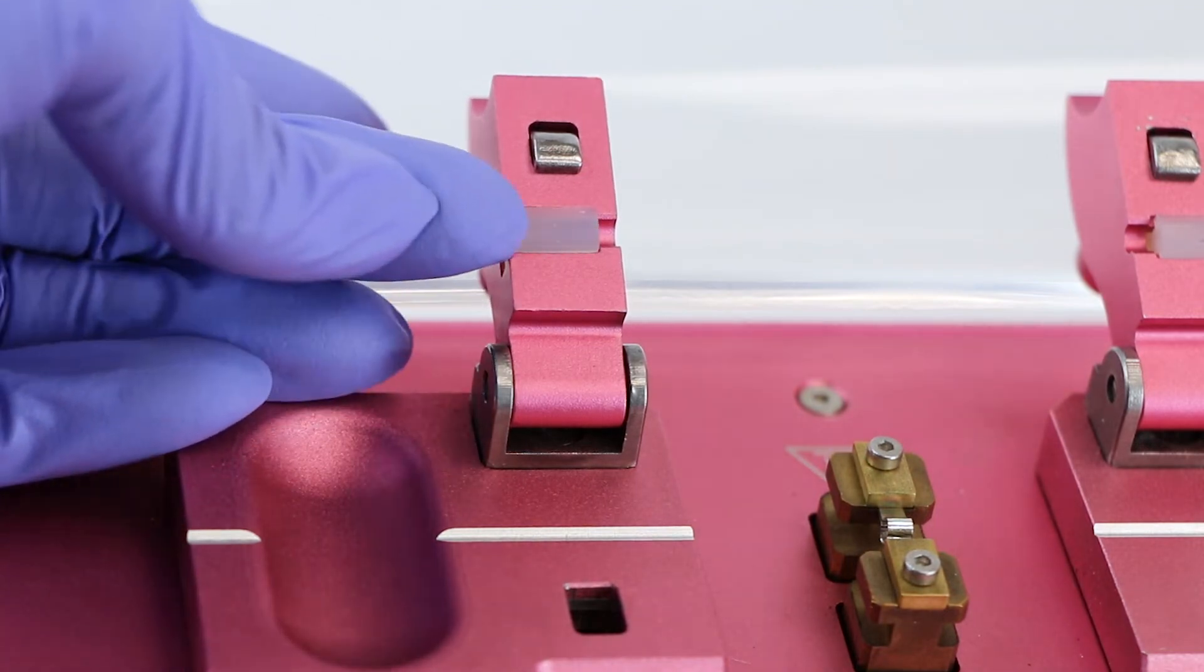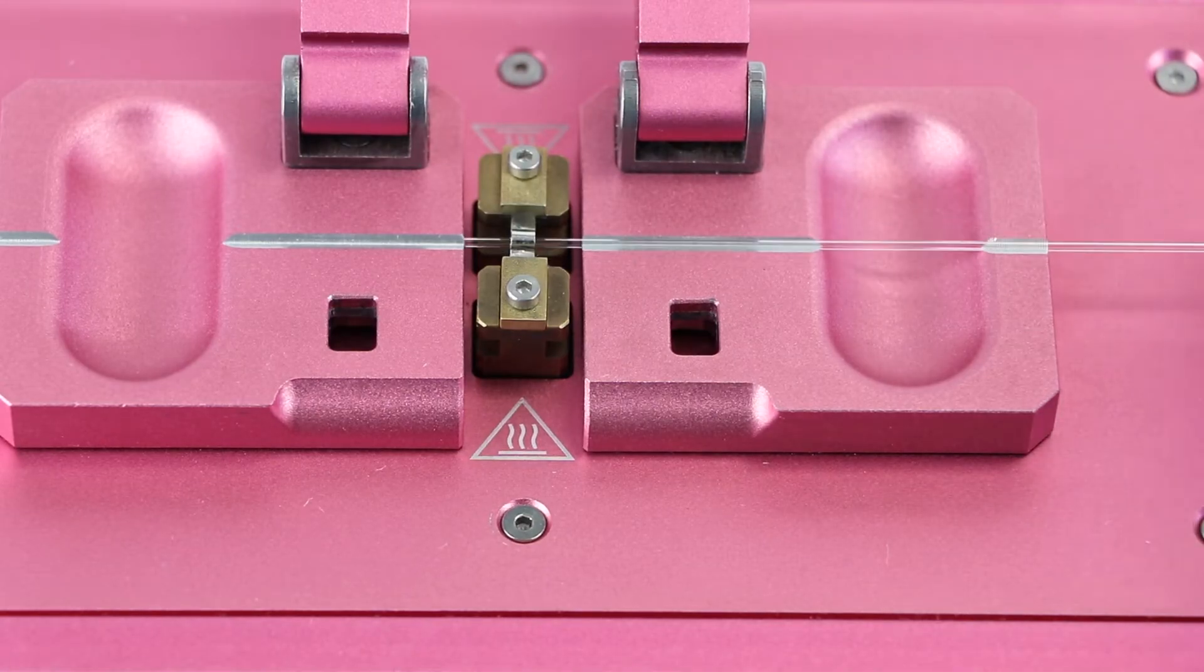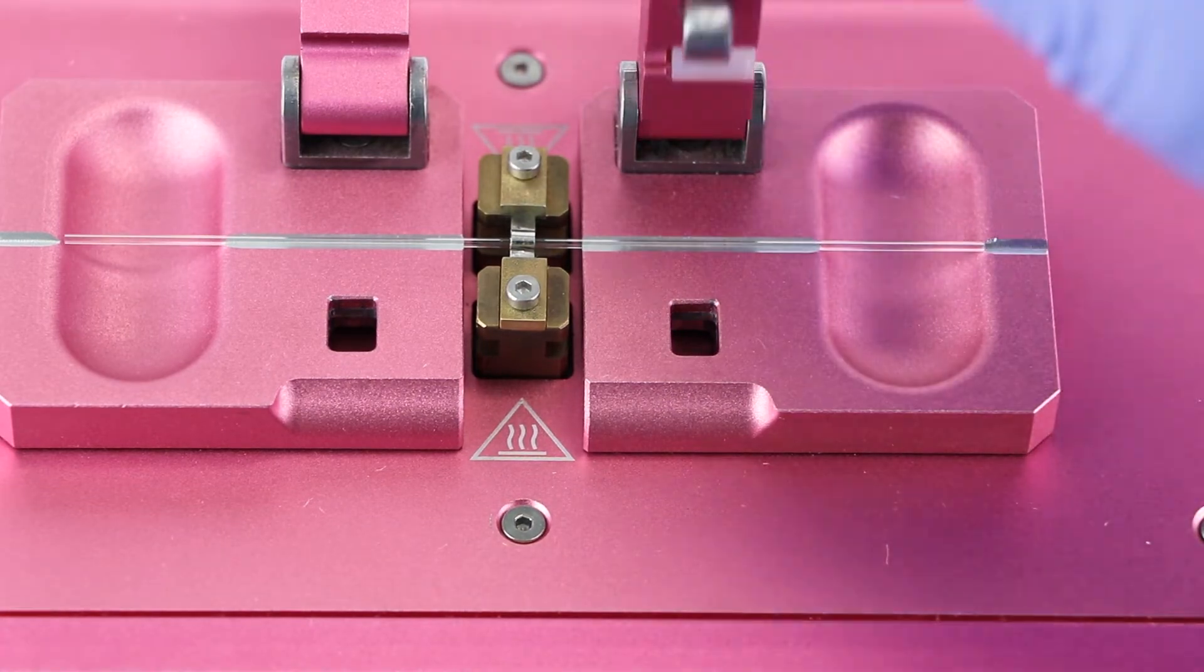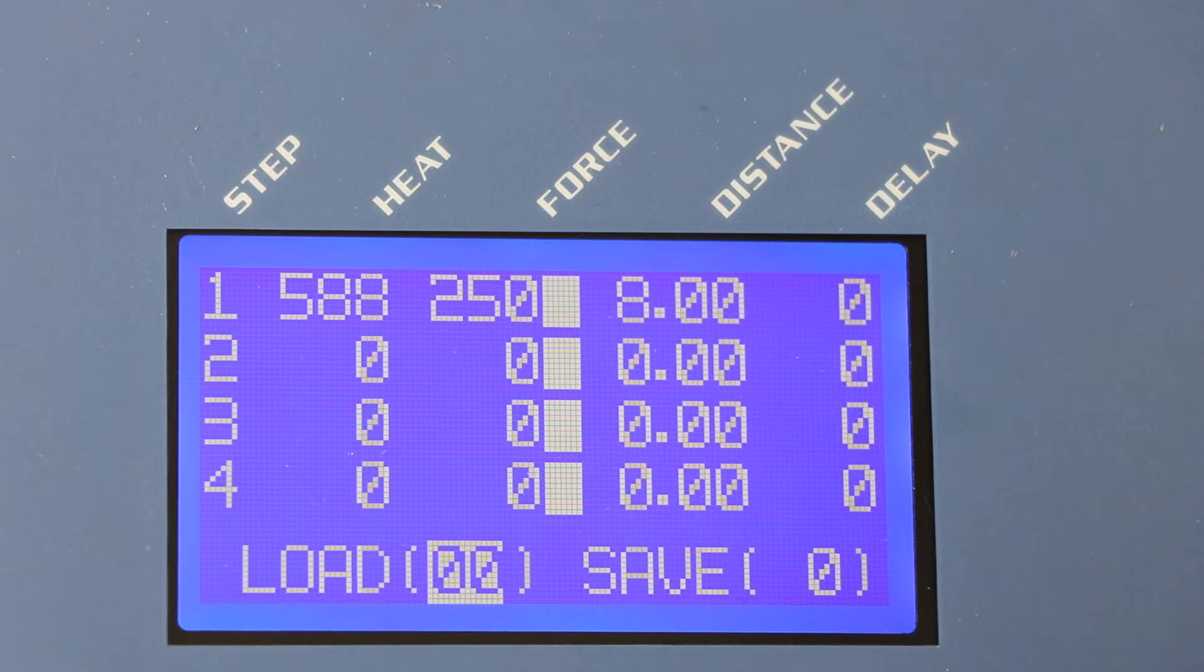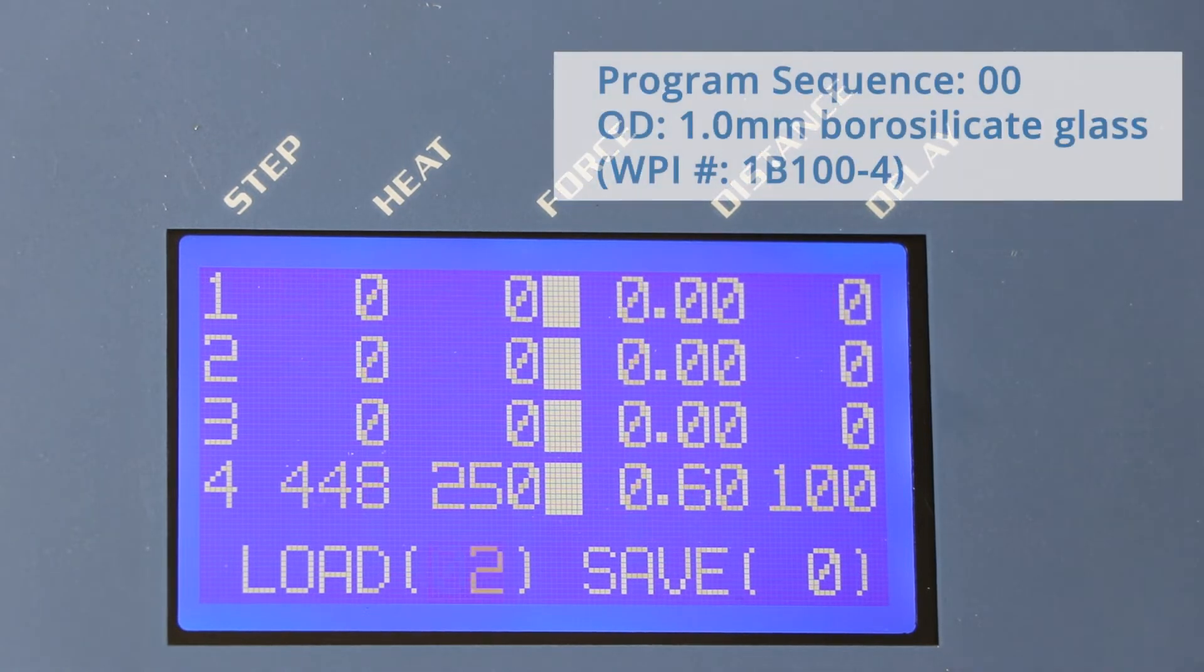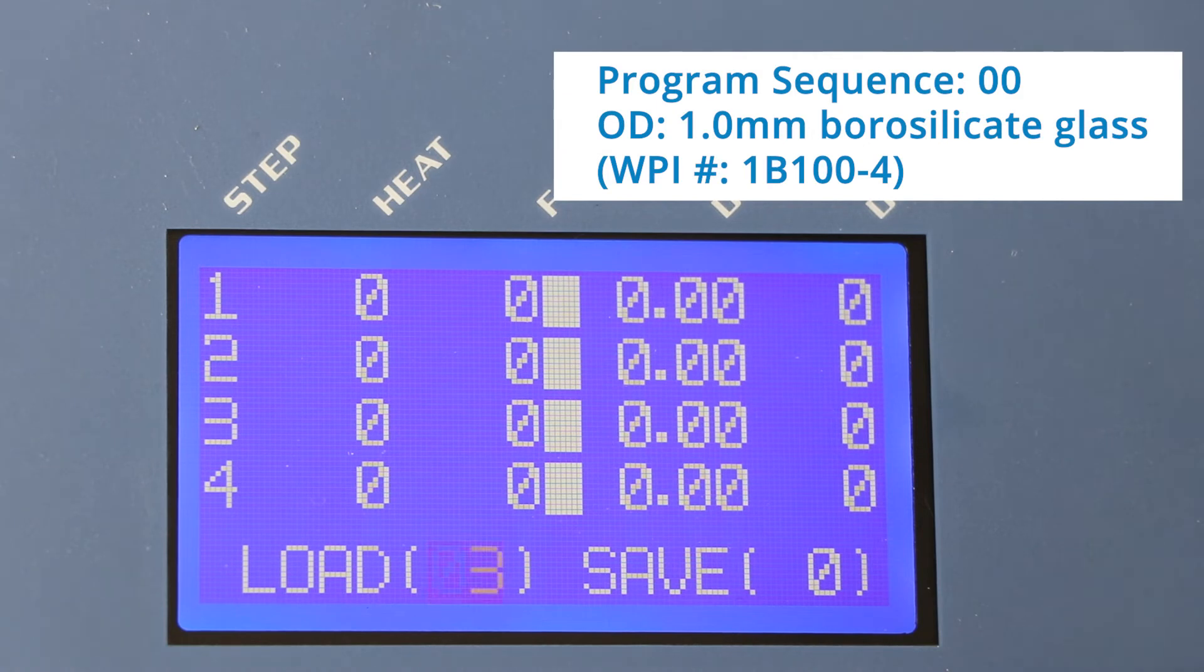Mount the glass capillary onto the carriage and secure it with the glass clamps. On the LCD display, choose the correct sequence. If you do not have a sequence yet, choose one from the program storage. Program sequence 00 is designed for an outside diameter glass of 1.0 millimeter.